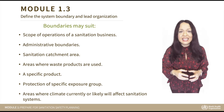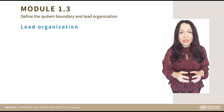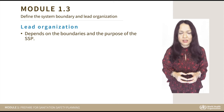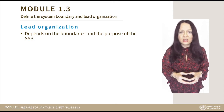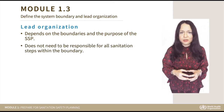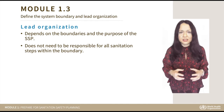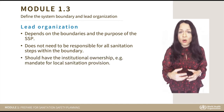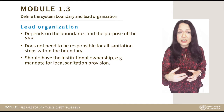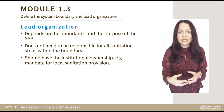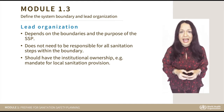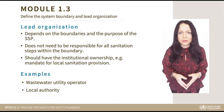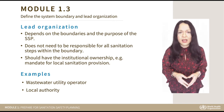The leading institution for SSP will depend on the boundary and purpose of the SSP. The lead organization does not need to be responsible for all sanitation steps within the boundary, but it should have the institutional ownership—for instance, the mandate for local sanitation provision. Examples are the wastewater utility or the local authority.